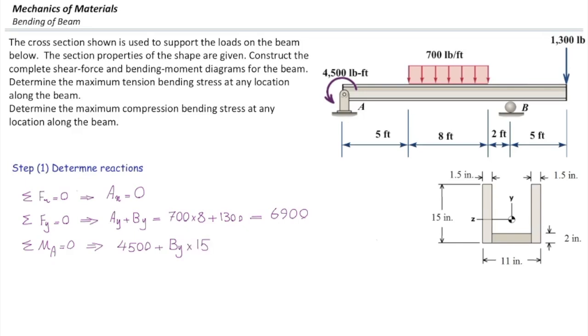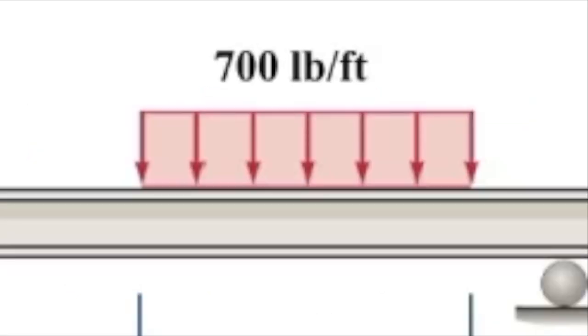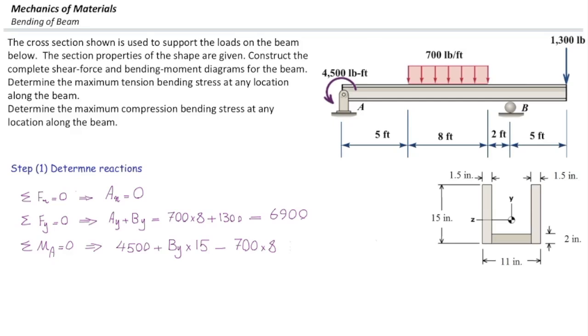And then we do have two external forces. First, the distributed load. The magnitude of the force, as we discussed, is 700 multiplied by 8. This is producing a moment clockwise, so I use negative sign for that. Where is the resultant force of that distributed load? That would be in the middle of that. What is distance of that to A? 5 plus 4, which is 9.